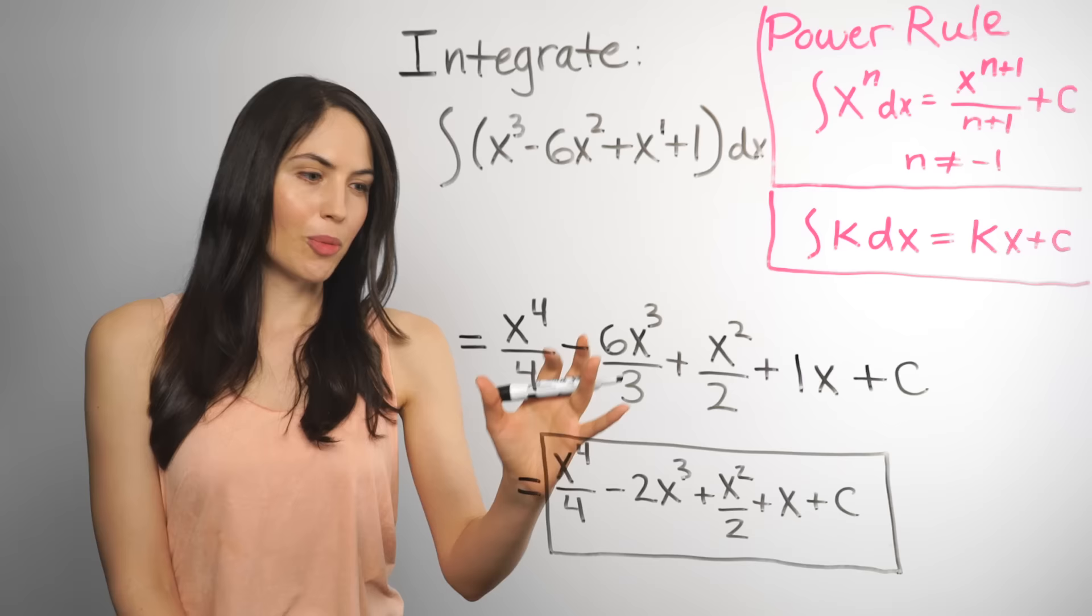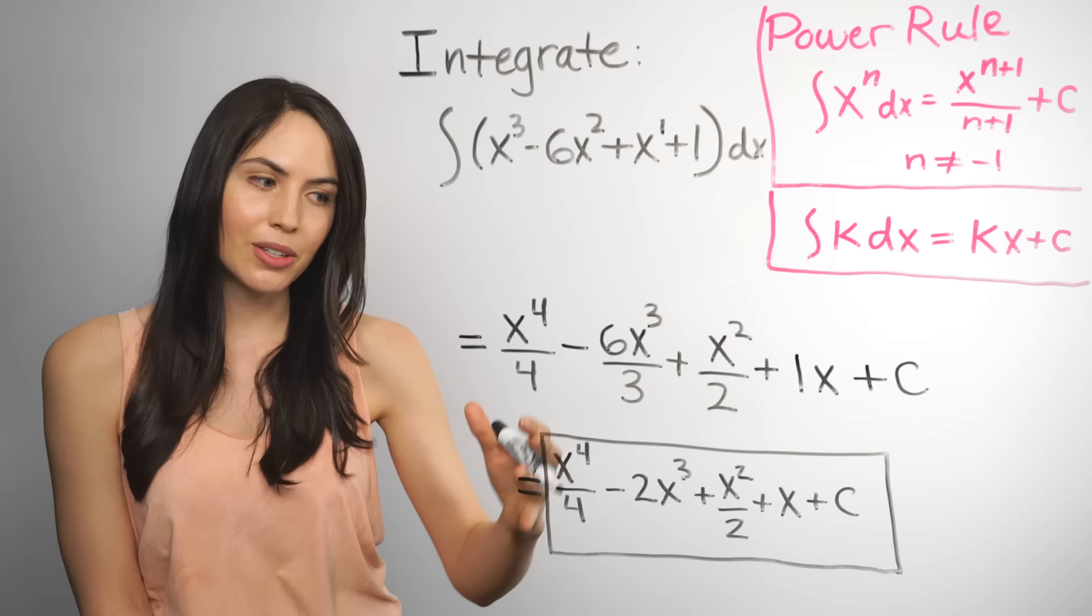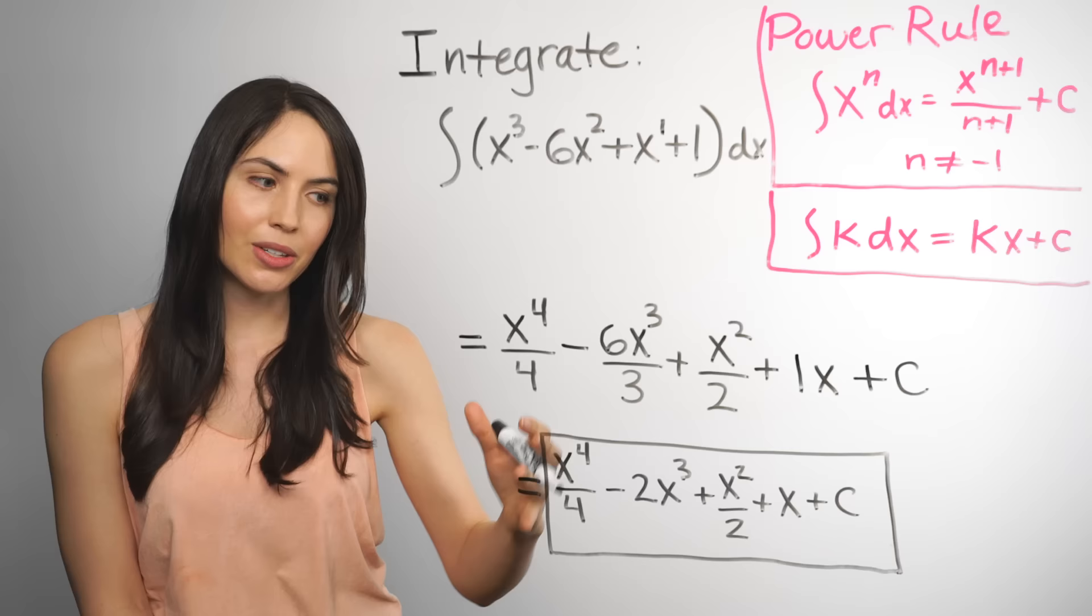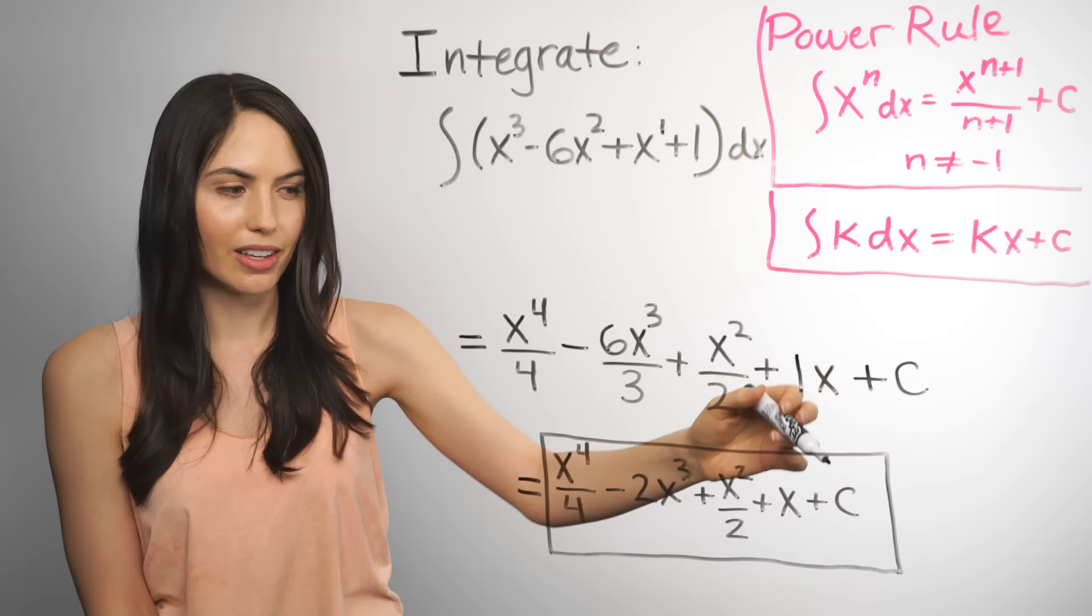So here it is all cleaned up. Remember this is the original function, higher level function we got by integrating. So if you want, you can check this answer by taking the derivative of it and you will get back your original integrand. Even though there's this plus c here. Because remember the derivative of a constant is just 0. So that goes away.